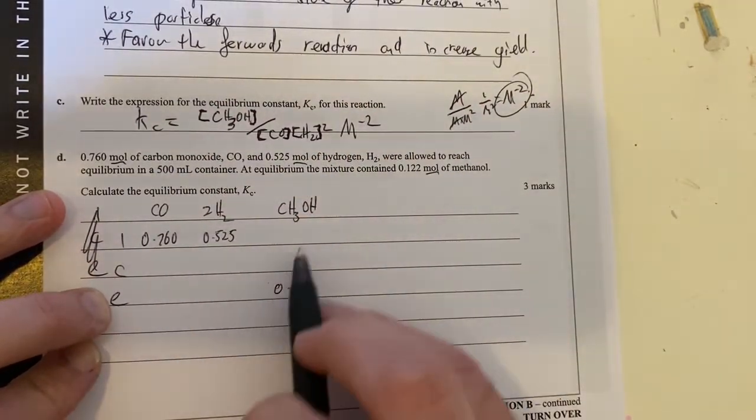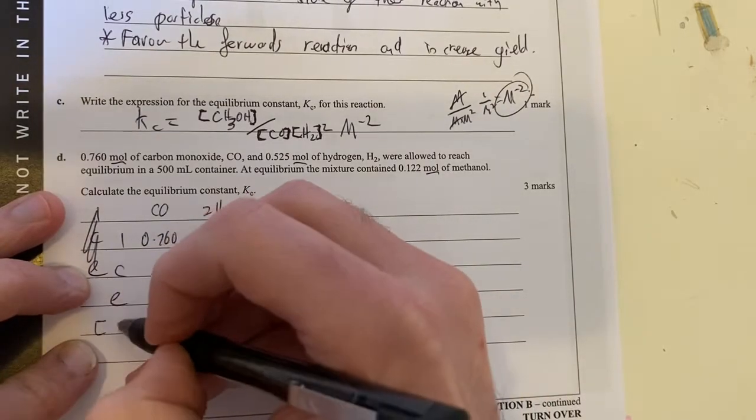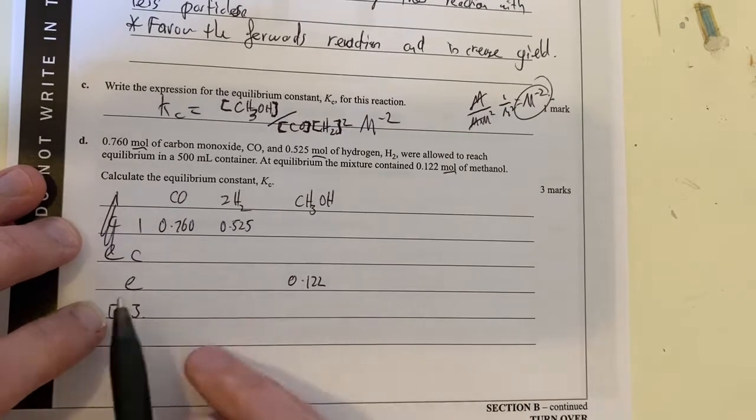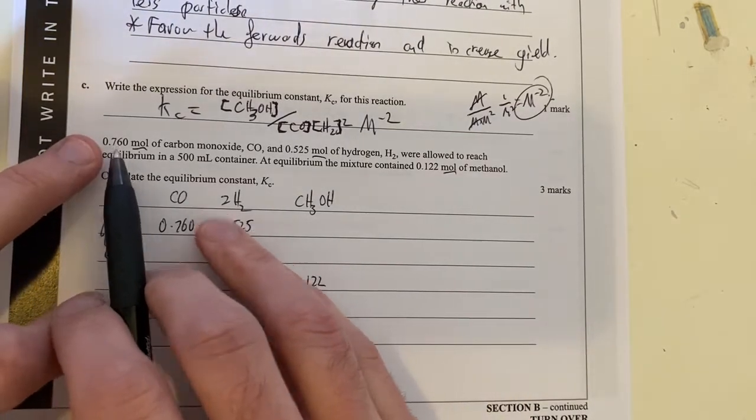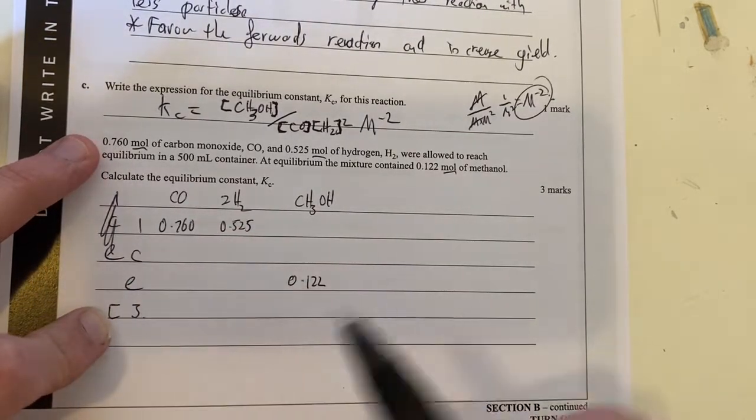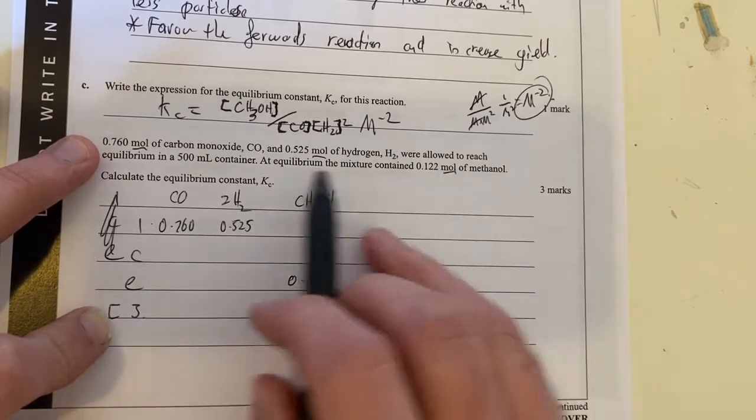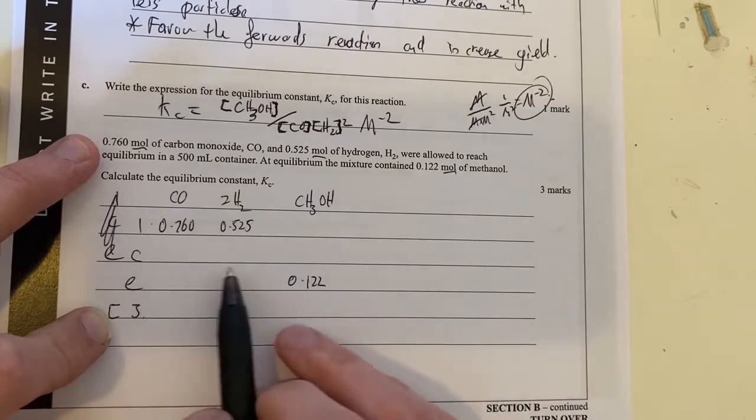So therefore, I can use my ICE table in moles, and then I can work out my equilibrium concentrations to then get to what Kc is going to be at the end of it. I could convert these into concentrations straight away, but I'm going to do it at the end. It doesn't really matter, as long as the numbers you're plugging in to your ICE section have the same units, you should be right.